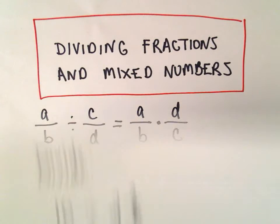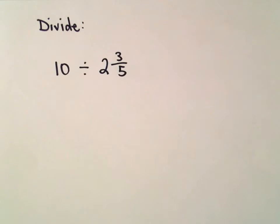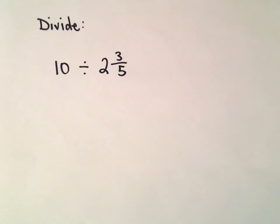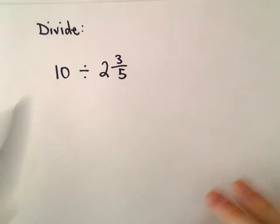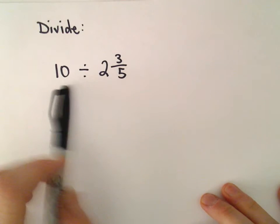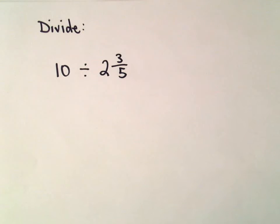Here we're going to look at an example of dividing a whole number by a mixed number. What I'm going to do is make both of these into single fractions, and then take the division and write it as multiplication.